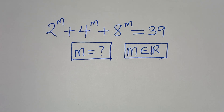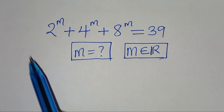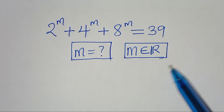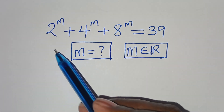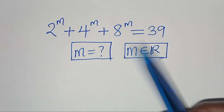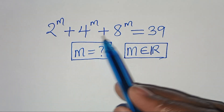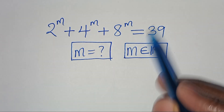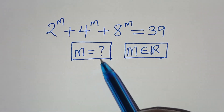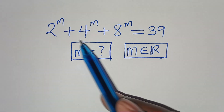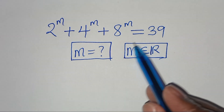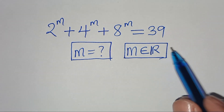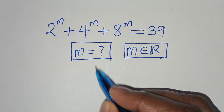You are welcome to solve this algebra problem: 2 to the power of m, plus 4 to the power of m, plus 8 to the power of m, is equal to 39. What is the value of m, given that m is a member of the real numbers?